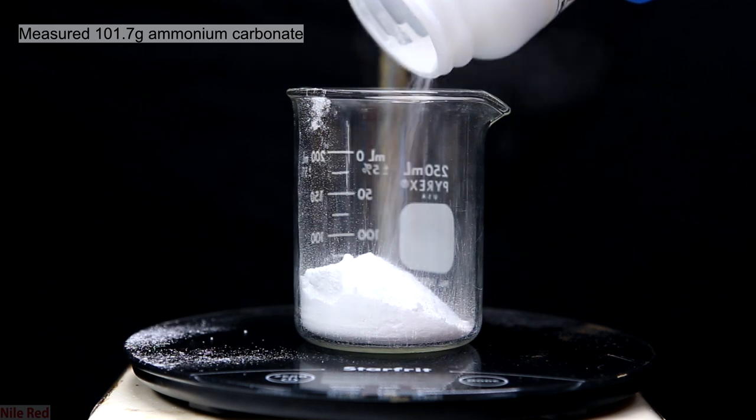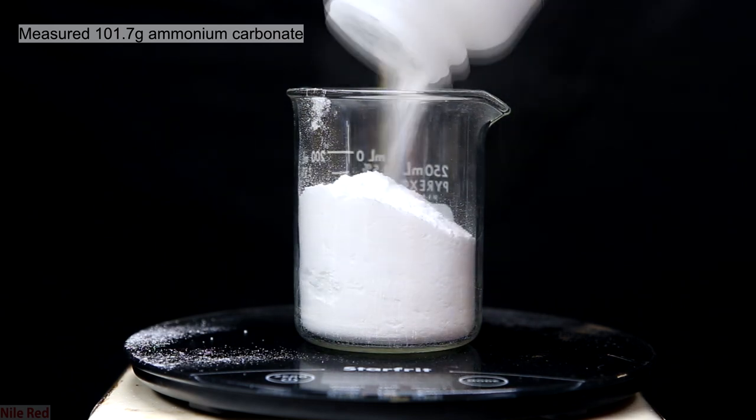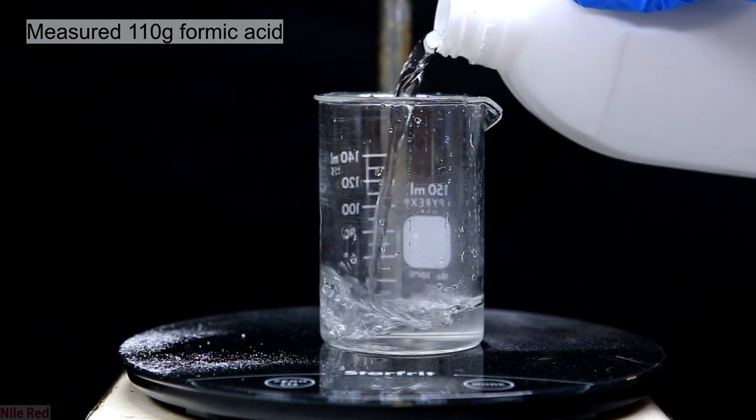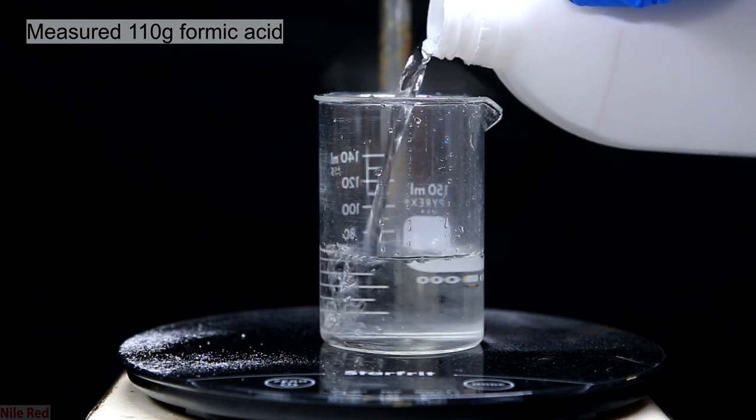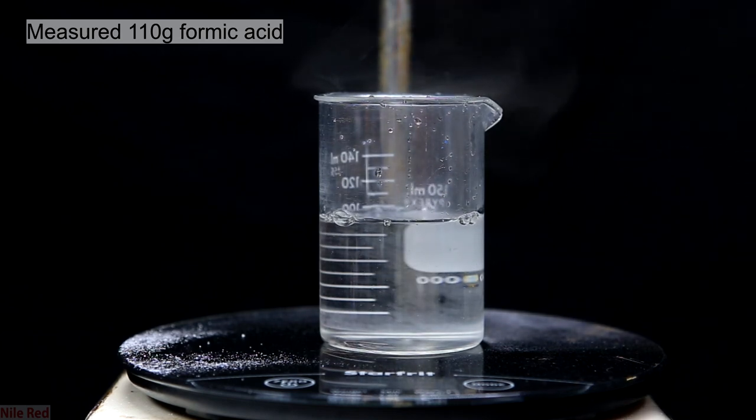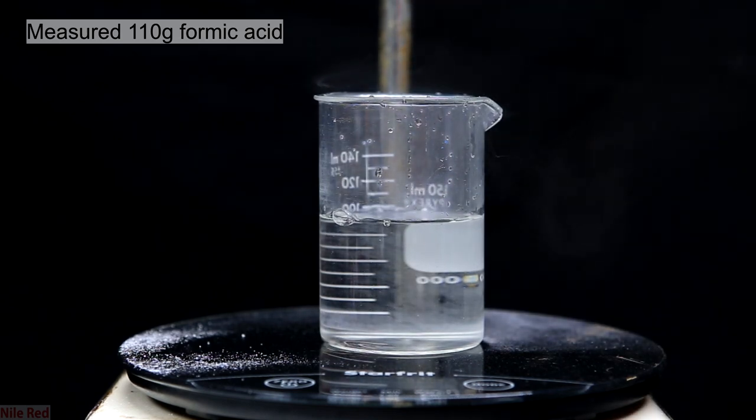I start out by weighing 101.7 grams of ammonium carbonate. I then moved on to the formic acid and I weighed out 110 grams. The formic acid that I used was 90 to 92%, so I made my calculations based on the assumption that it was 90%.